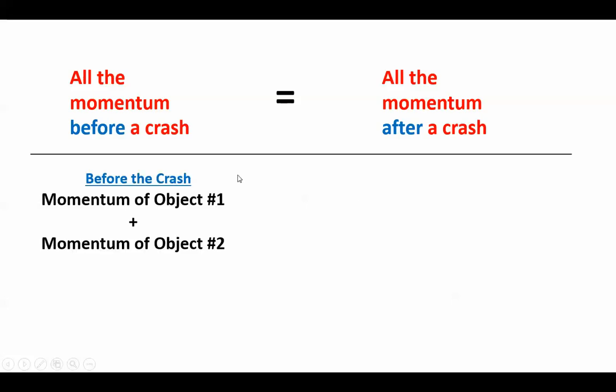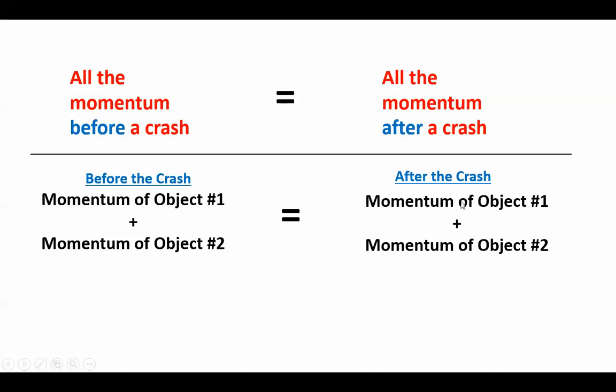before the crash, if let's say we have two objects that are going to crash into each other, all of the momentum of the first object plus the second object, if I add those two things, that should be equal to all of the momentum for those same two objects after the crash.